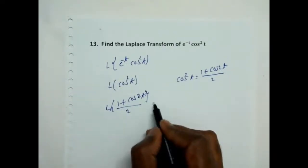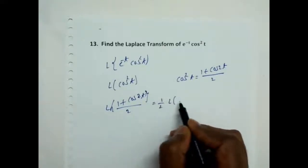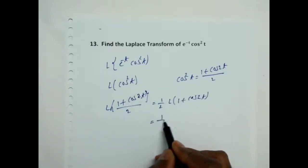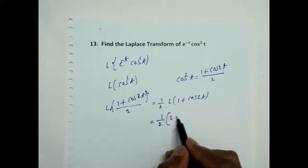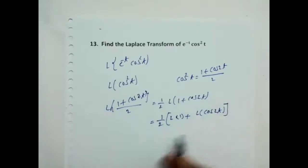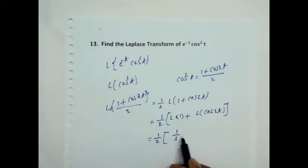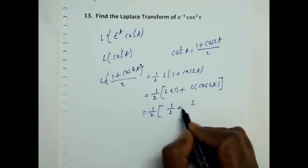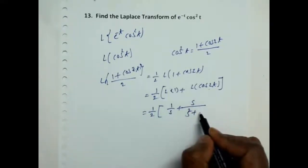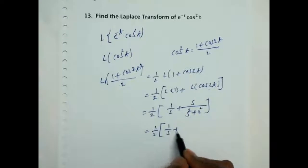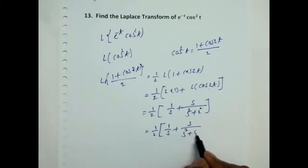Here 1 by 2 is a constant, so we can take it outside. That is 1 by 2 into Laplace of 1 plus cos 2 theta. Now apply the Laplace to each term: that is 1 by 2 of Laplace of 1 plus Laplace of cos 2 theta. That equals 1 by 2 into 1 by S, plus S by S squared plus 2 squared, that is 4.